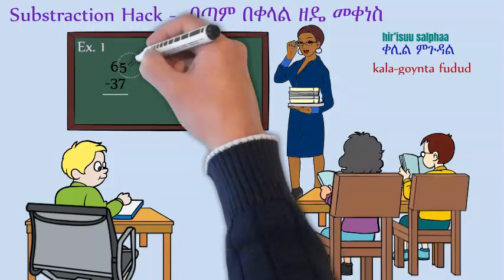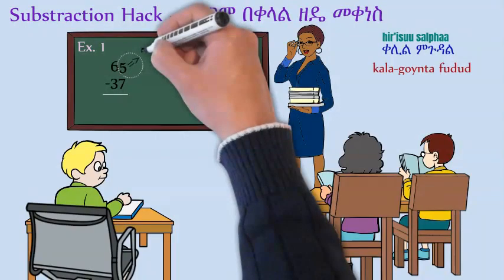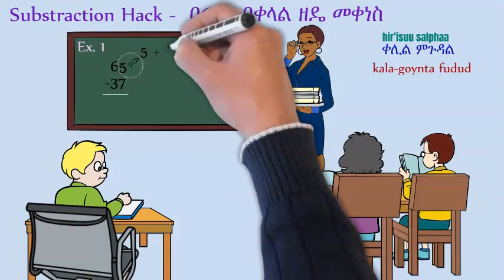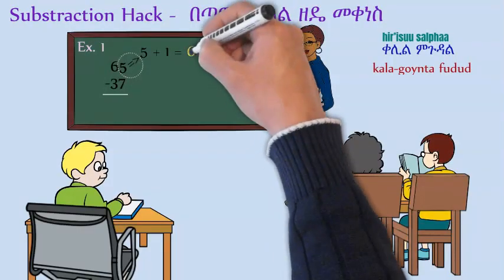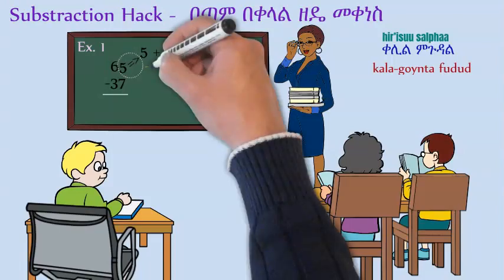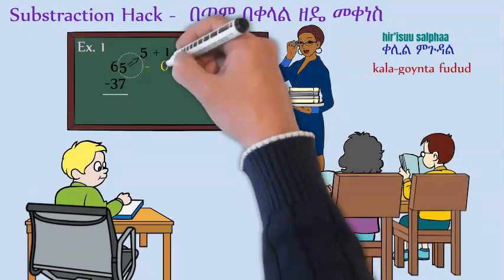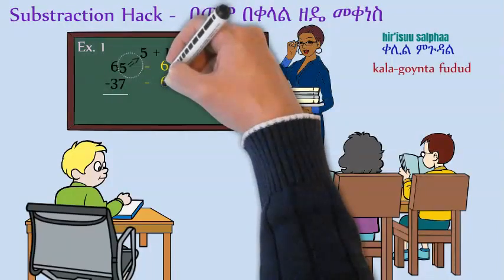Let's take the 5 and add one to it. We are going to subtract 5 from 65, and then 1 from 60. Which means we have to subtract 6 from 65.